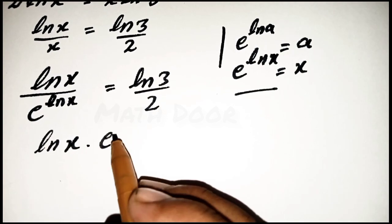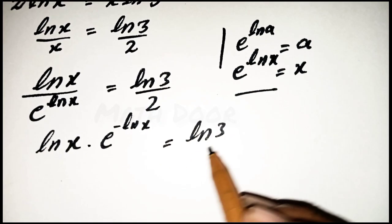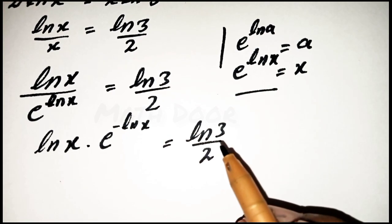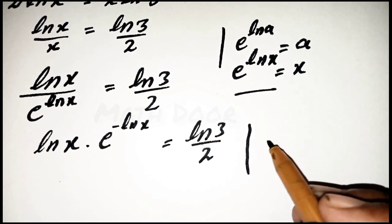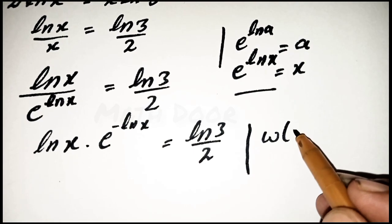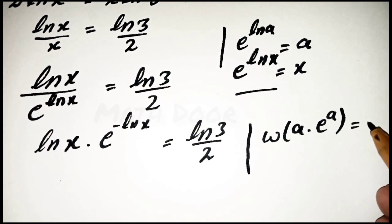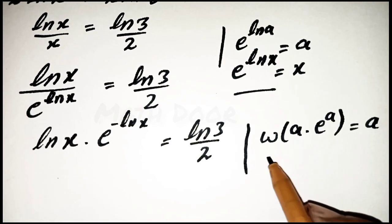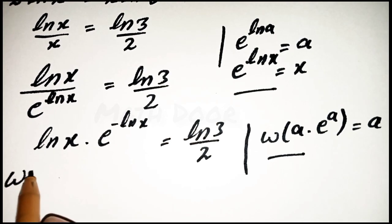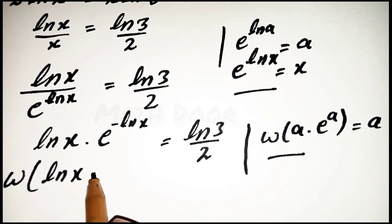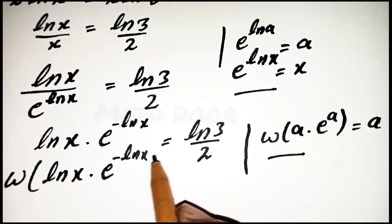So e^(ln x) with ln(x) = ln(3)/2. In the next step we apply the Lambert W rule: W(a·e^a) = a. We apply this rule to the equation by writing it as W(ln(x)·e^(−ln x)) = ln(3)/2.